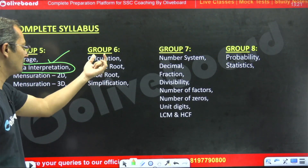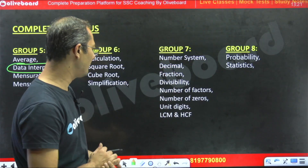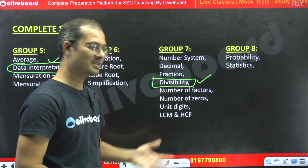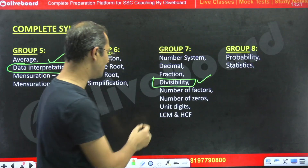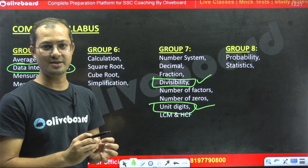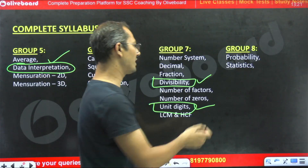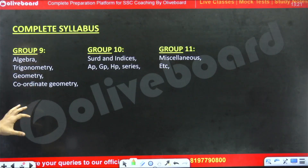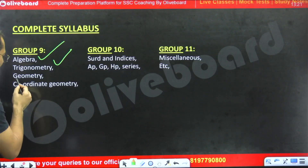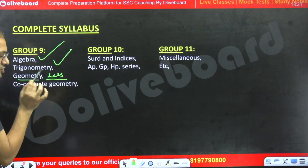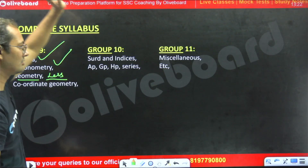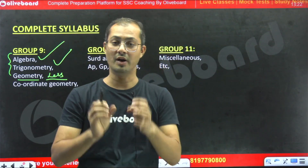In Group 7, the number system — you must pay attention to divisibility, as we frequently see questions from this area. The unit digit and unit digit approach are also important to learn. You can focus on probability and statistics but they are not the most scoring ones. Algebra is scoring, and trigonometry is also most scoring. Geometry is less scoring, but you should still focus on it. Algebra and trigonometry are the most scoring portions.